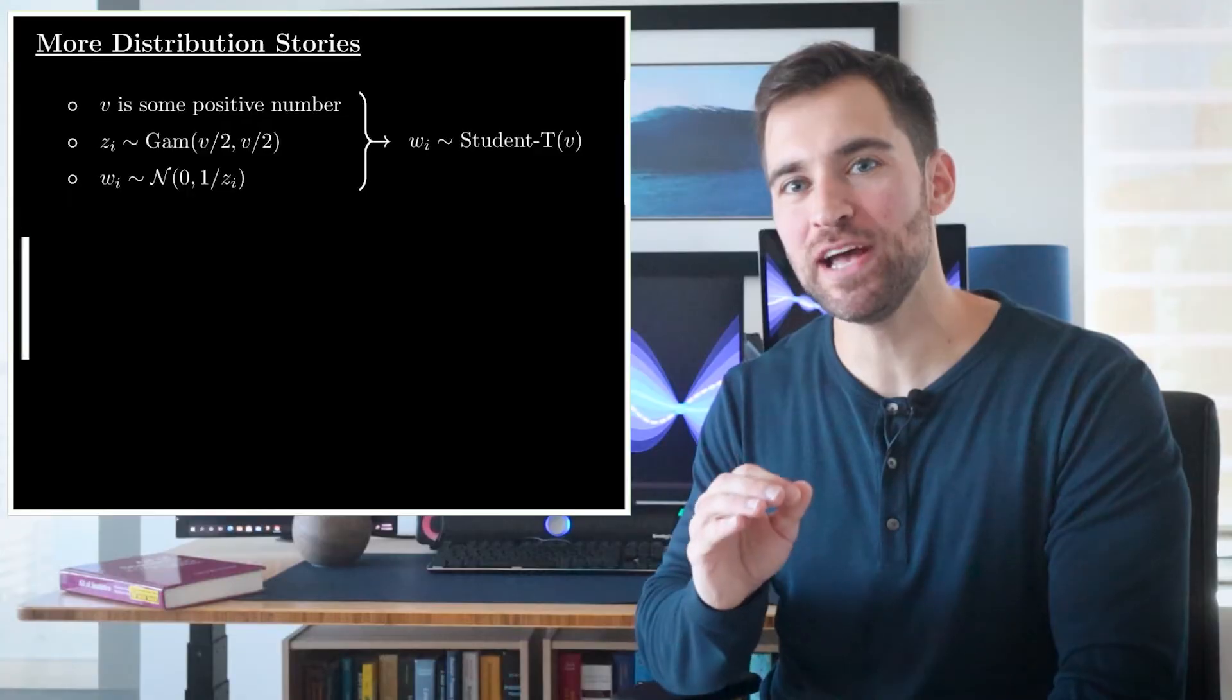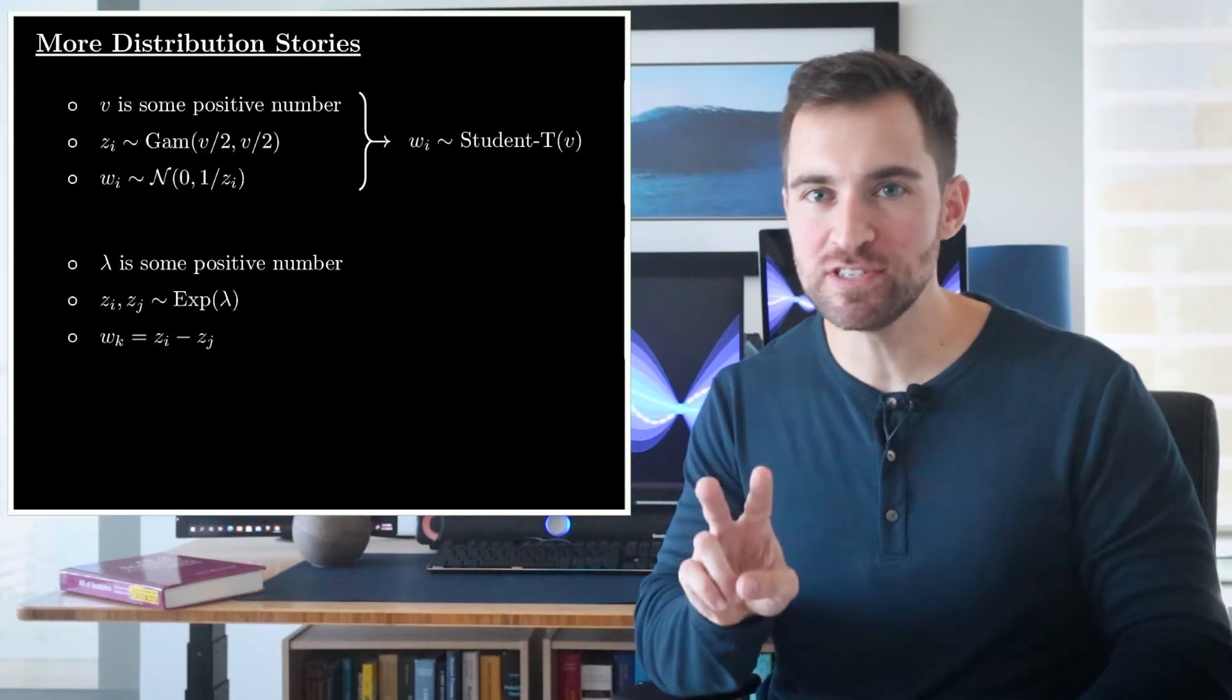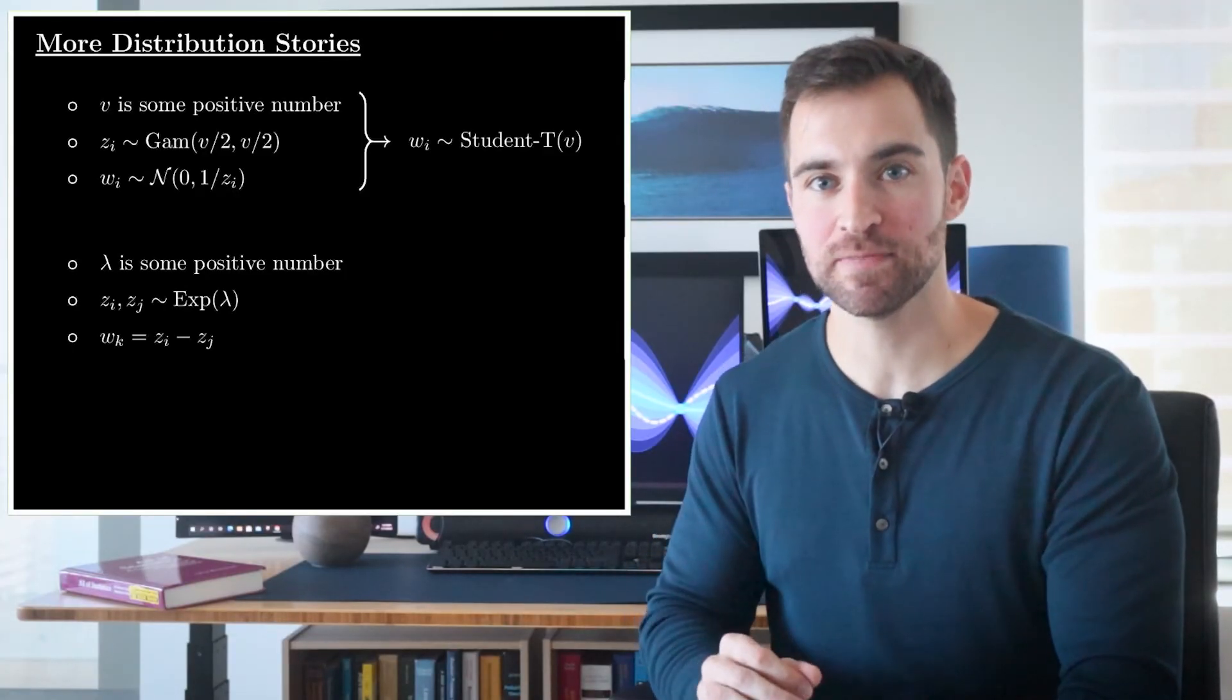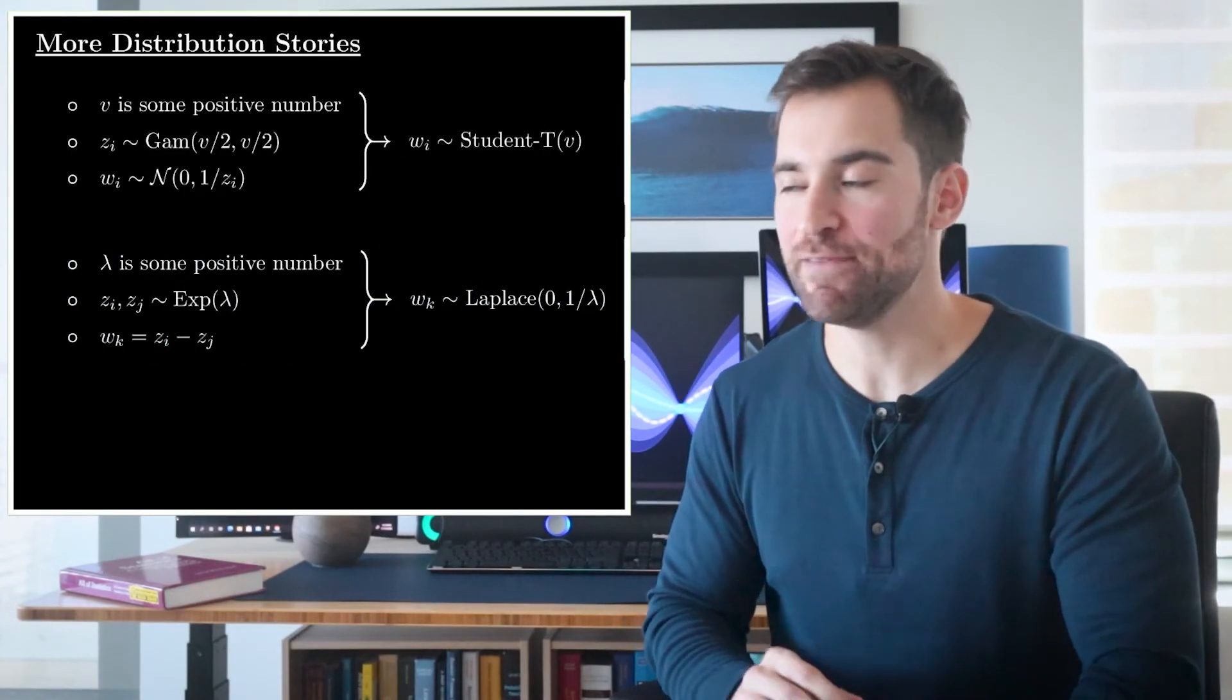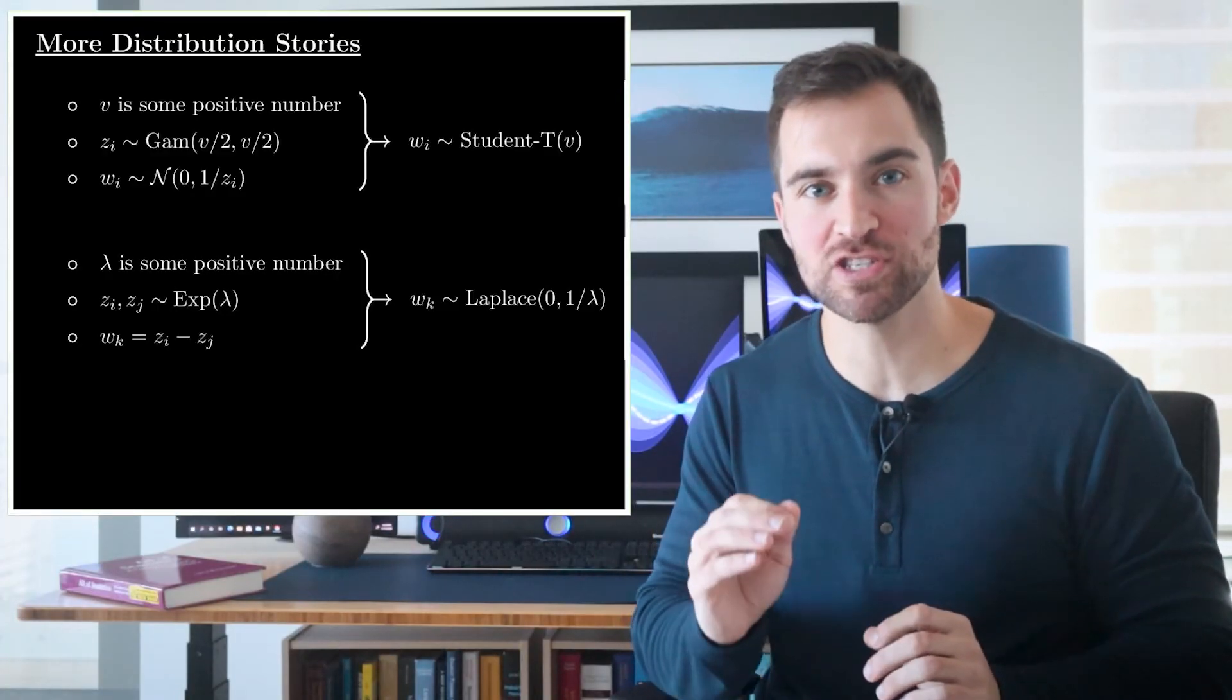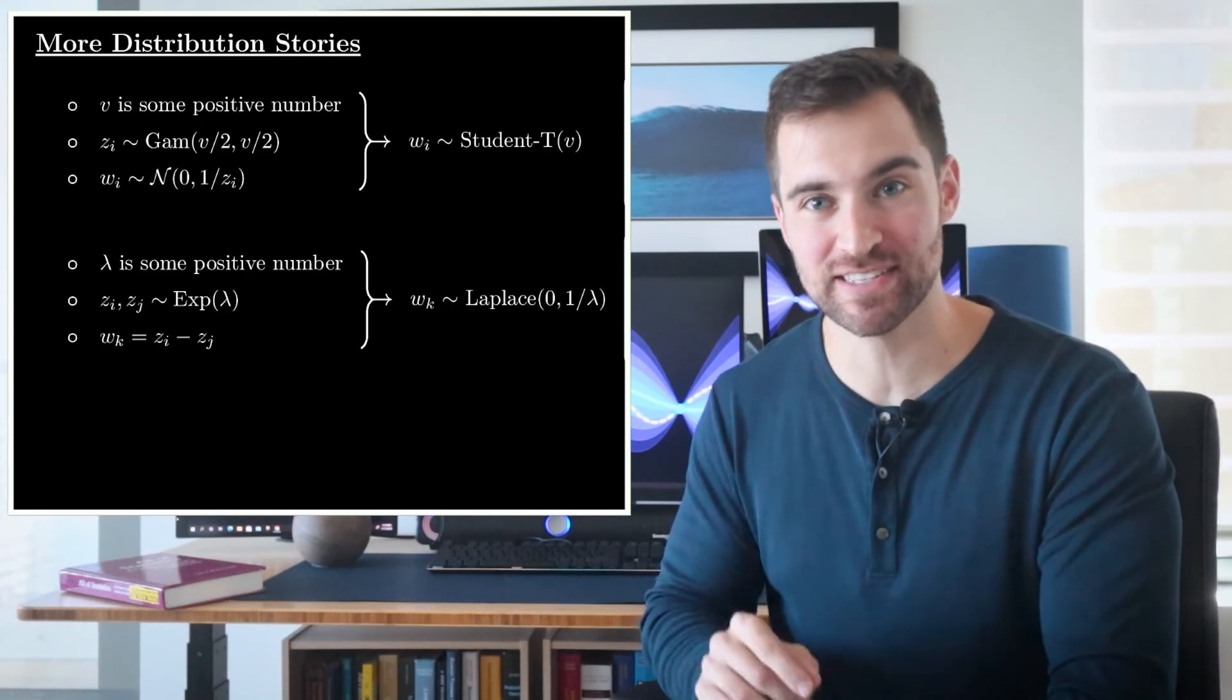Okay, another. Let's say we have an exponential distribution with some fixed lambda parameter. We'll draw two samples from that exponential, zi and zj, and take their difference and call that difference wk. Well in this case, wk would have a Laplace distribution. If you don't know about the Laplace, it shows up a lot in machine learning for generating sparse solutions. And again, I felt it was pretty unintuitive until I saw this angle.